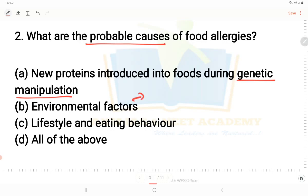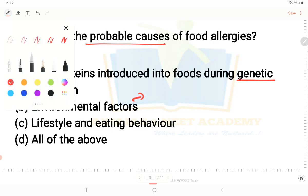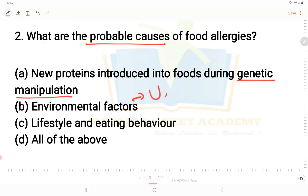Environmental factors - based on the hygiene hypothesis. Urban people in cities are more prone to food allergies due to environmental factors. In rural areas, people are exposed to wheat and other foods from a young age, so their immune systems are more adapted. Also, our lifestyle and eating behavior contribute to food allergies. So option D - all the above - is the correct answer.